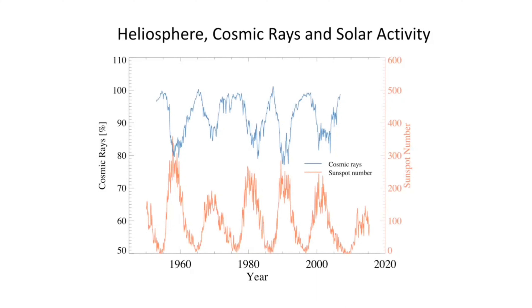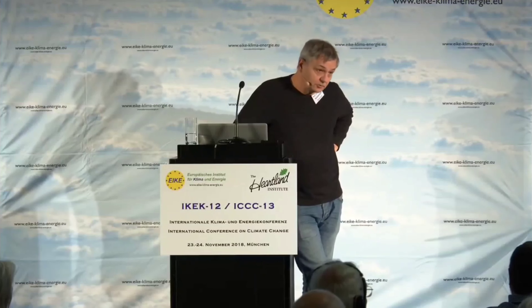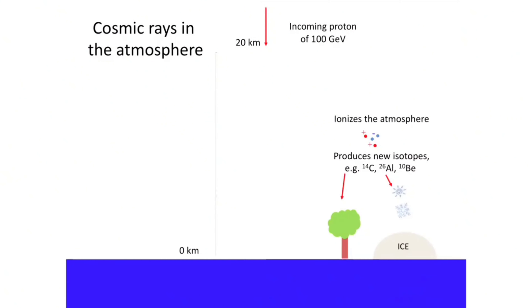As cosmic rays enter the solar system, some of them end up at the top of the atmosphere. What they do is produce a cascade down through the atmosphere — a very high energy proton going into the atmosphere produces a lot of secondary particles. It is ionizing the atmosphere. Most of the ions that we have in the atmosphere, in particular over the oceans, come almost exclusively from cosmic rays. In addition, we produce cosmogenic isotopes like carbon-14.